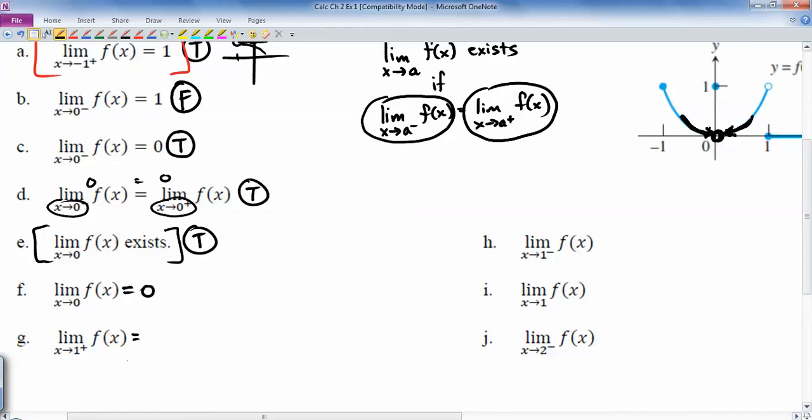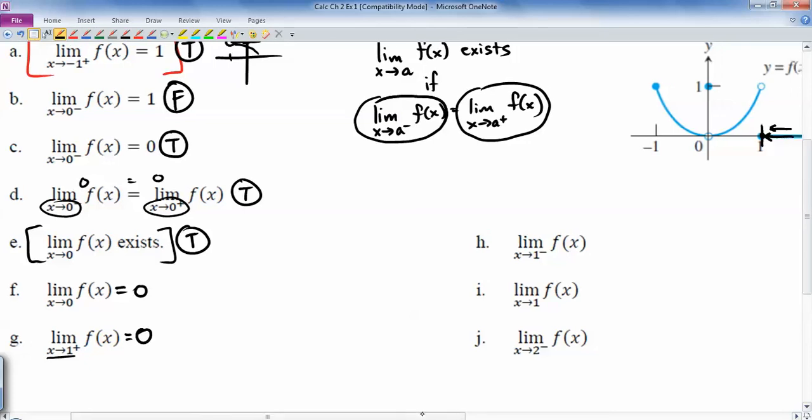In the next one, it's x goes to 1 from the right. So as x goes towards 1, so the x value has to go towards 1, from the positive side of 1. So I'm coming at it from this side. So as I get close to 1, the closer I get to 1, this whole function right here sits on the x-axis, so the closer I get to 1, the y value zones in on 0.